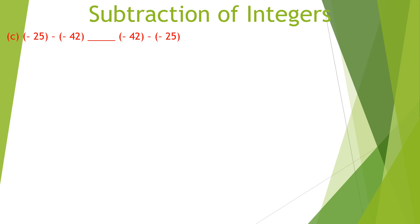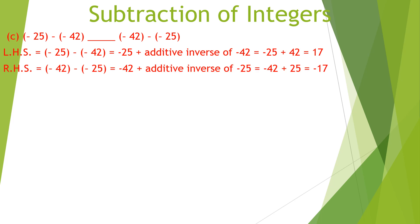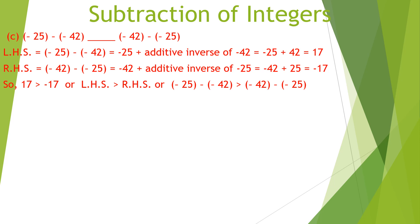Part C: minus 25 minus minus 42 versus minus 42 minus minus 25. The left hand side: minus 25 plus additive inverse of negative 42 equals minus 25 plus 42, equals 17. The right hand side: minus 42 plus additive inverse of minus 25 equals minus 42 plus 25, equals minus 17. Since 17 is greater than minus 17, the fill-in-the-blank is the greater than sign.